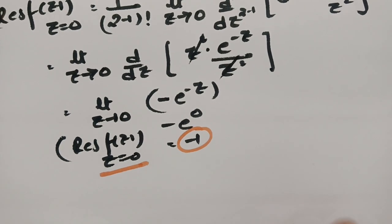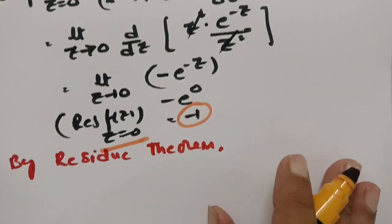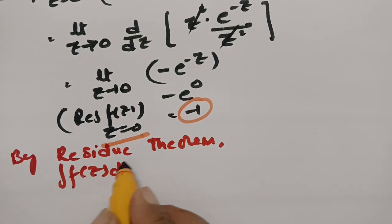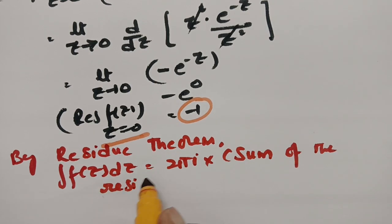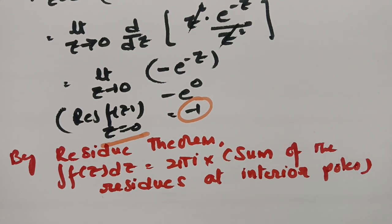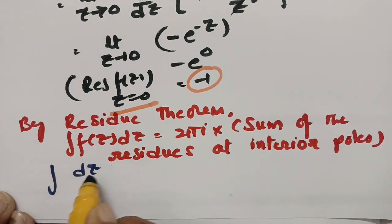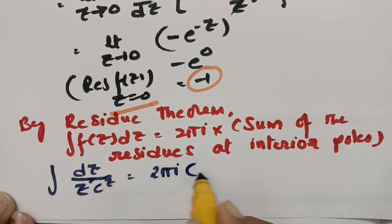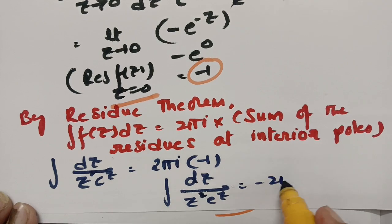Now we apply the residue theorem. By the residue theorem, the contour integral of f(z) dz equals 2πi times the sum of residues at interior poles. So the integral of dz divided by z-squared times e to the z equals 2πi times (−1), which gives minus 2πi.